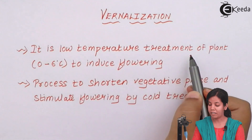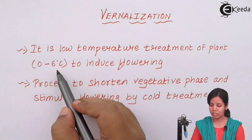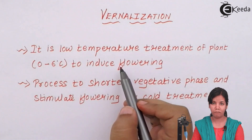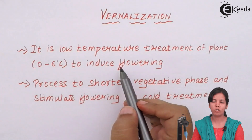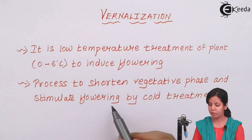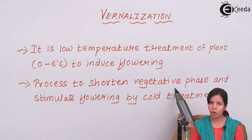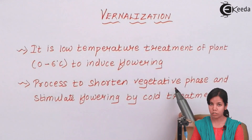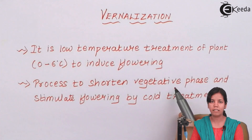Vernalization is the low temperature treatment of plants at 0 to 6 degrees Celsius to induce flowering. You keep the plants at low temperature so that they can flower or produce sexual reproductive organs. The androecium and gynoecium present inside plants are responsible for sexual reproduction. This process shortens the vegetative phase and stimulates flowering by cold treatment, pausing vegetative growth and concentrating more on the reproductive phase.